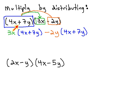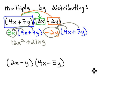Notice now, we see this (4x + 7y) with the 3x and the negative 2y. This sets up another simple type of distributing, distributing the 3x through parentheses, giving us 12x² + 21xy, and distributing the negative 2y through the next set of parentheses, giving us -8xy - 14y².